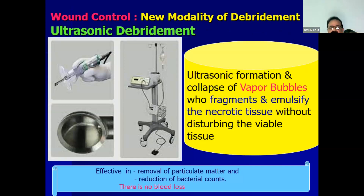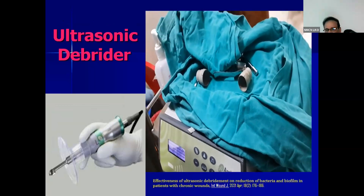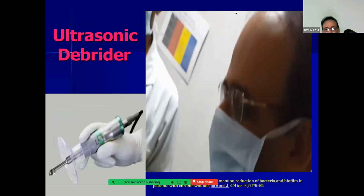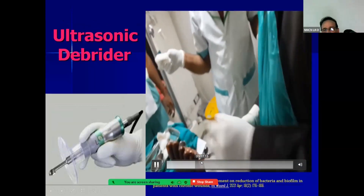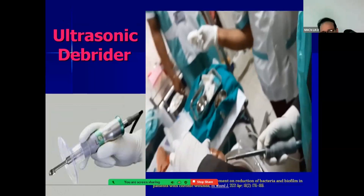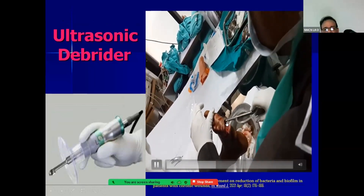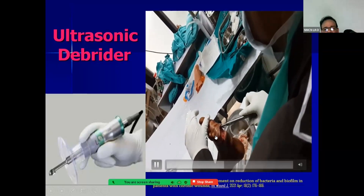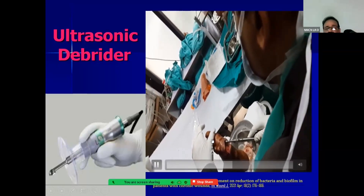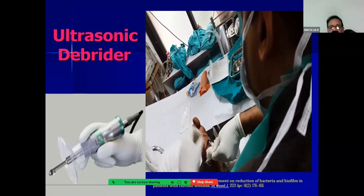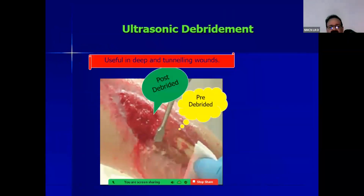In ultrasonic debridement, the ultrasonic formation and collapse of vapor bubbles fragments and emulsifies dead necrotic tissue. This is the Aerobella device which I use in my center. Saline comes through the tubing and is infused into the probe. There is formation of ultrasonic vapor bubbles which defragments the dead necrotic tissue or slough. On the right side you can see the field pre-debrided and on the left side post-debrided, so the biofilm has been removed.